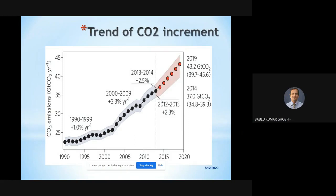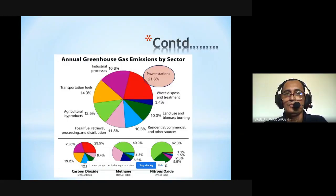These are the different sectors that contribute to global greenhouse gas emissions. In the power sector, 21% contribution of greenhouse gas emissions can be mitigated by utilizing solar photovoltaic or other renewable energy technologies.